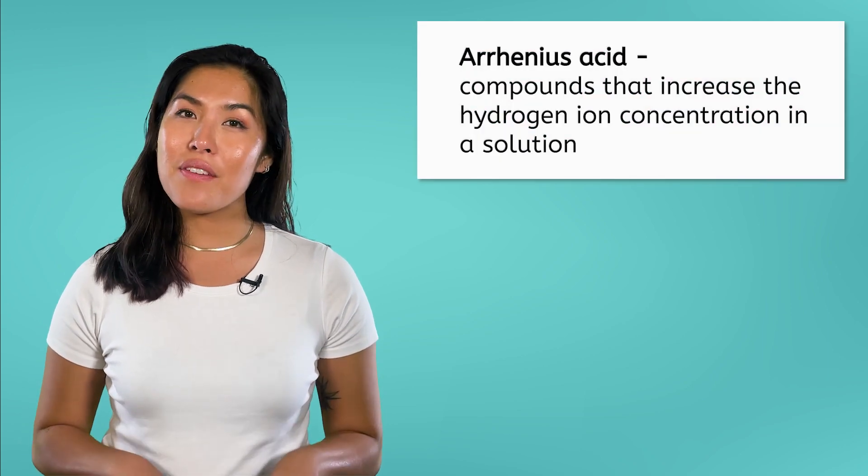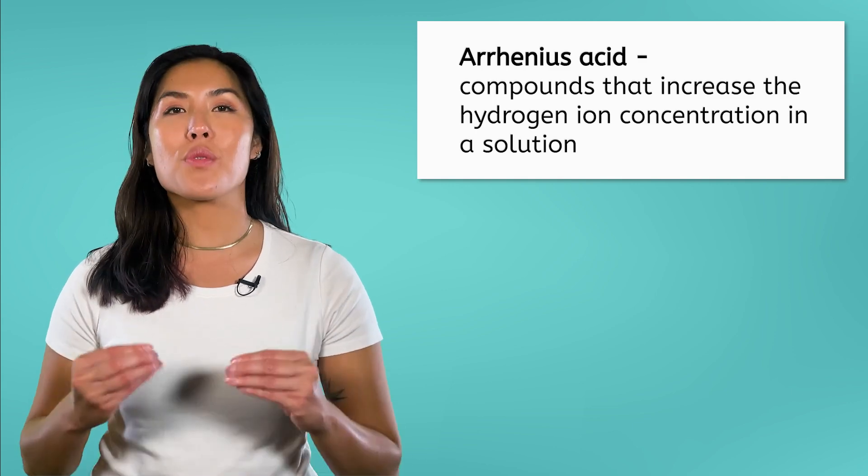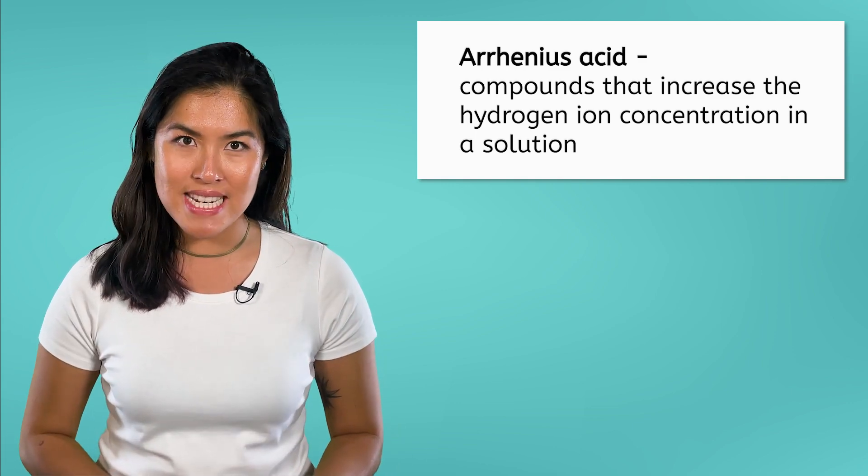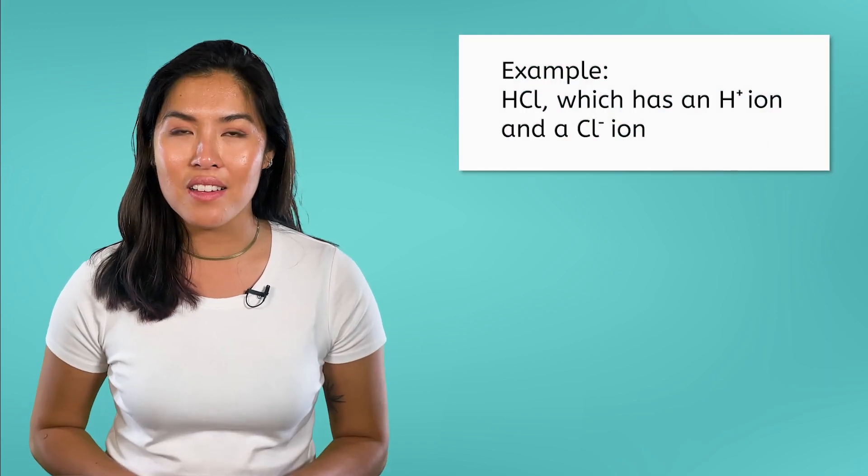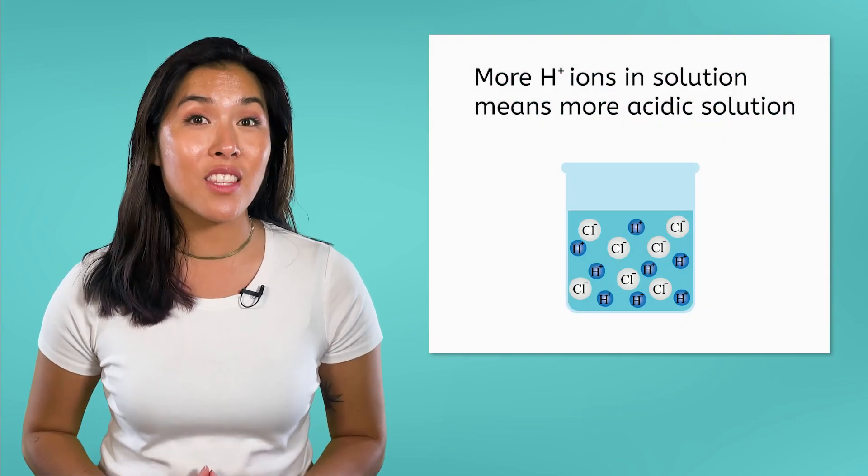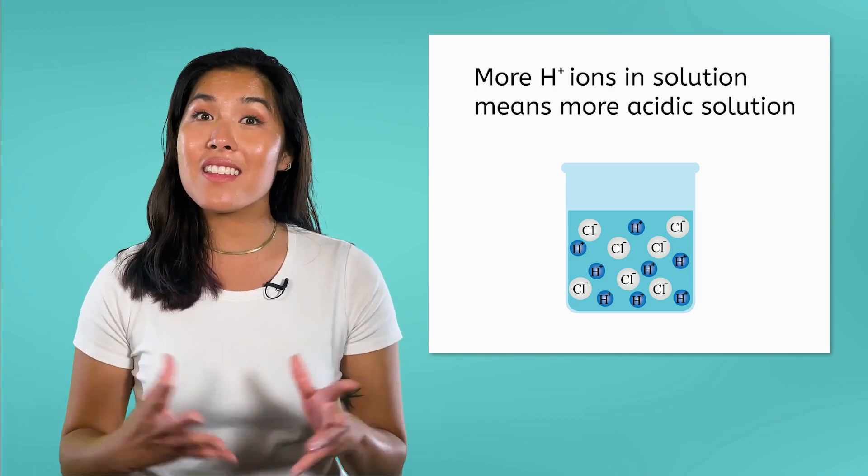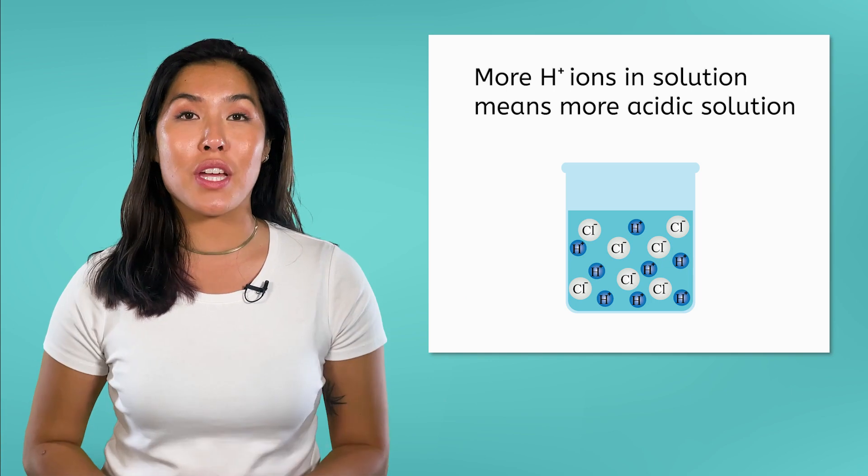There are multiple ways that you can define an acid. But in this course, we are going to use the Arrhenius definition. In this definition, acids are defined as compounds that increase the hydrogen ion concentration in a solution. Usually, these compounds are ionic compounds, like HCl, where the positive ion is an H plus ion. The more hydrogen ions in the solution, the higher the concentration of hydrogen ions, and therefore, the more acidic the solution will be.